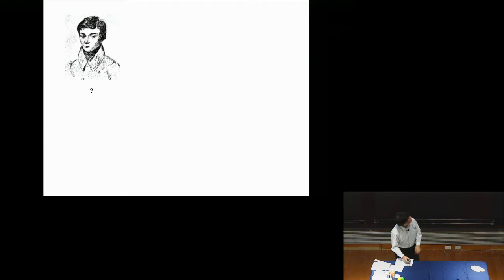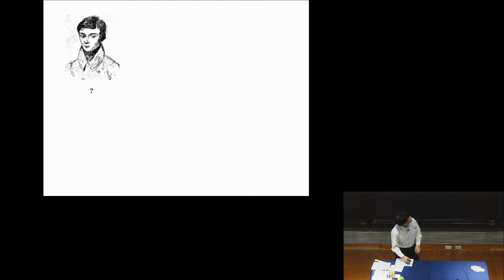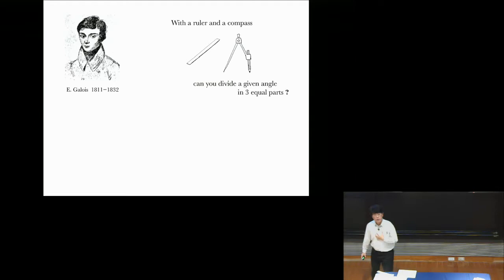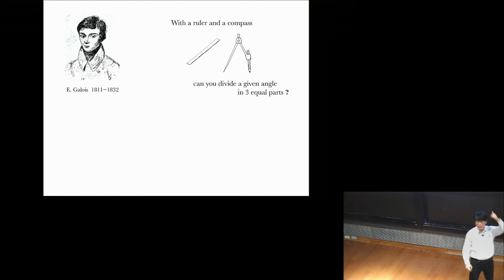Do you recognize this gentleman? He looks rather sad and romantic. Galois. Yeah, that's Galois. Yes, that's right. So he's a French mathematician who died at the young age of 20. And, of course, you're thinking, well, Tadashi can't count because if you subtract 11 from 32, it is 21, not 20. But actually, he died shortly before his 21st birthday, so he was 20.